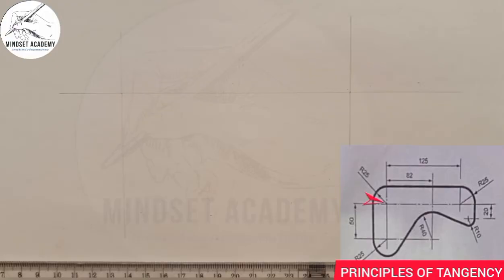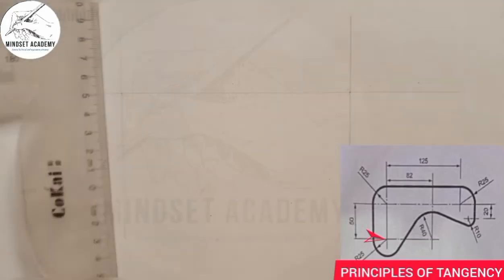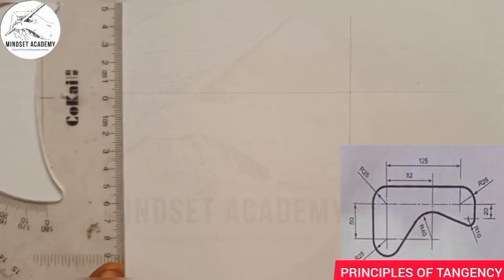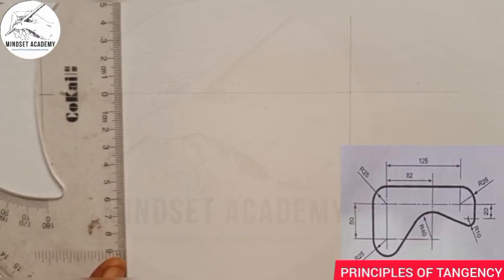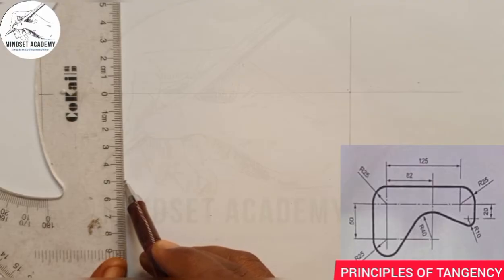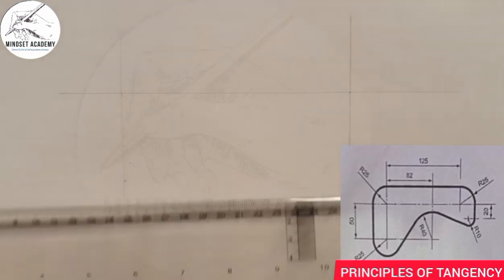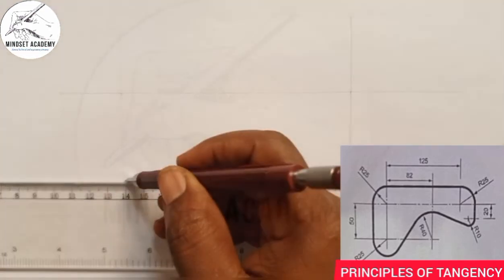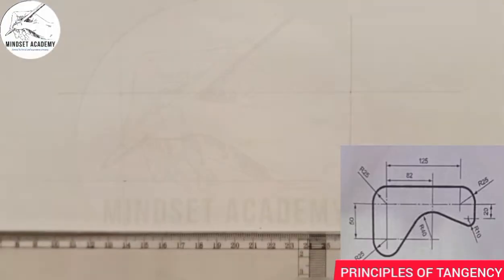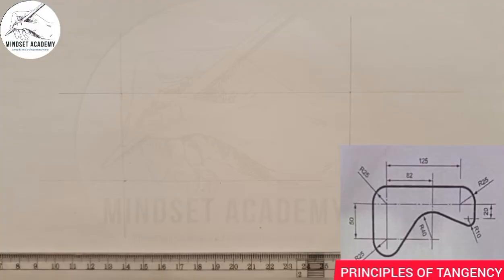From this same point here I'm going to measure 50 downward, as you can see on the screen. So I'll measure 50 downward from this point. From 0 to 250, I'll draw a vertical line there — faint line first.